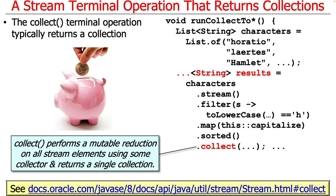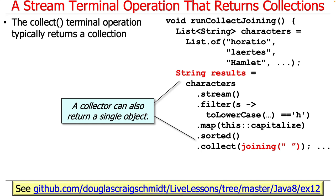For example, if we're collecting to list, we'd have a list of strings. If we're collecting to set, it's going to be a set of strings. If we're collecting to map, it's going to be a map of strings, and so on. Most commonly it's a collection. However, a collector can also return a single object if we instruct it to. Here's a simple example where you collect the results into a string instead of a list of strings, using something called the joining collector, which joins all the elements together separated by a space.